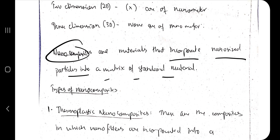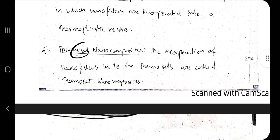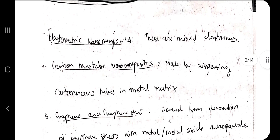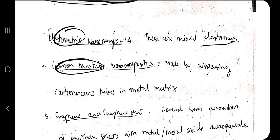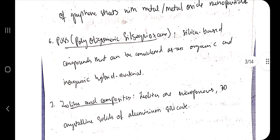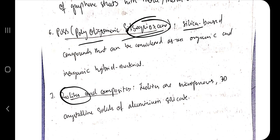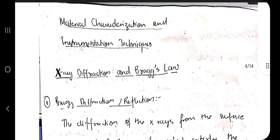Nanocomposites are materials in which nanomaterials are incorporated into normal metals or polymers. The types include: thermoplastic nanocomposites, incorporated into thermoplastic resins; thermoset nanocomposites; elastomeric nanocomposites, which have elastic properties mixed with elastomers; carbon nanotube composites, made by dispersing carbon nanotubes in a metal matrix; graphene-based composites using graphene sheets; POSS, which is polyhedral oligomeric silsesquioxane mixed with silica compounds; and zeolites, which are microporous 3D crystalline solids of aluminum silicate.